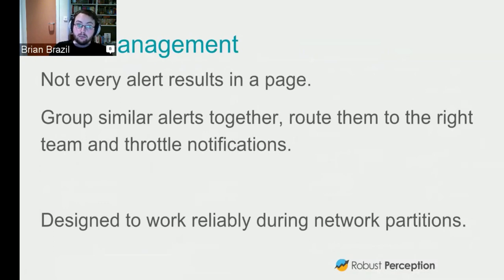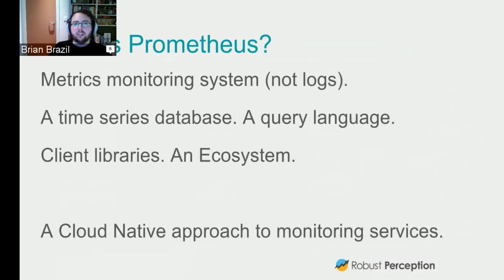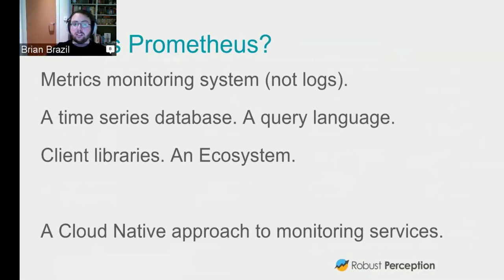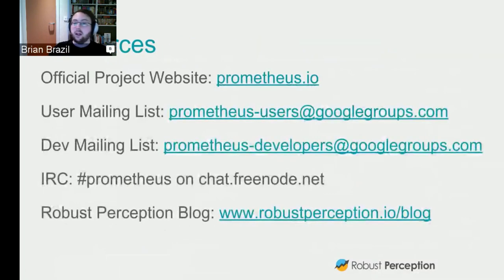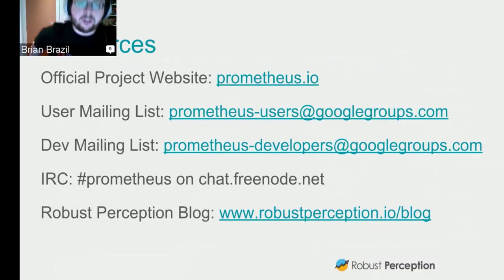To summarize: Prometheus is a metrics monitoring system, a time series database, a local query language, client libraries for your data, and an ecosystem of exporters. We're trying to promote a cloud-native approach to monitoring services, because caring about individual pods or individual machines is not sane in a highly dynamic infrastructure like OpenShift. There are some links, the slides will be up later. I'd like to show you a bit of a demo.